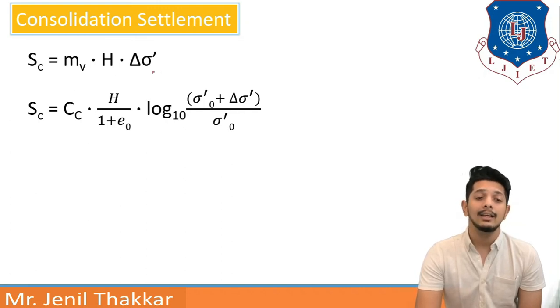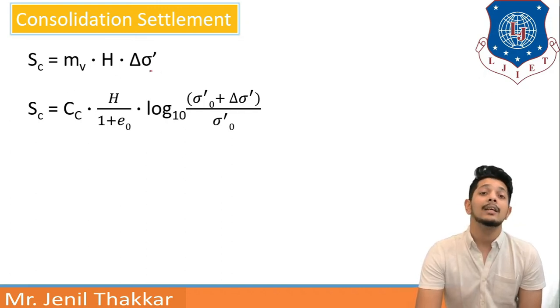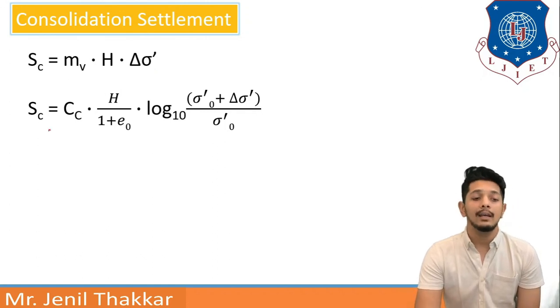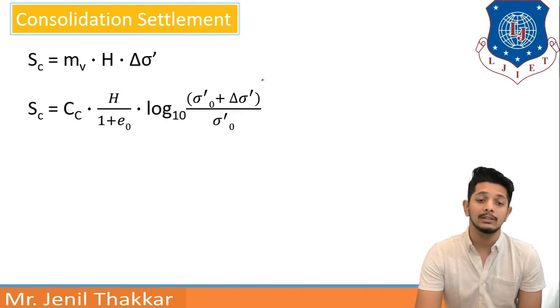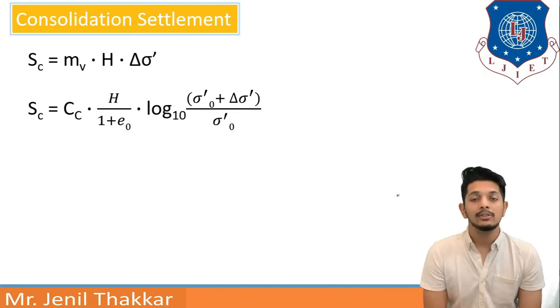Now mv is coefficient of volume change, h is thickness and delta sigma dash that is effective pressure difference. Again sc is equal to cc that is compression index into h by 1 plus e0 into log 10 base sigma 0 dash plus delta sigma dash upon sigma 0 dash. Now sigma 0 dash that is initial effective pressure and effective pressure difference that is delta sigma dash. And h is thickness here and e0 is initial void ratio here. So I conclude my lecture here.